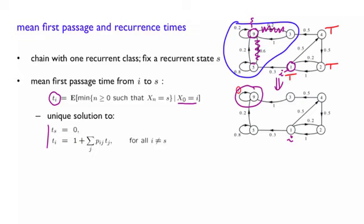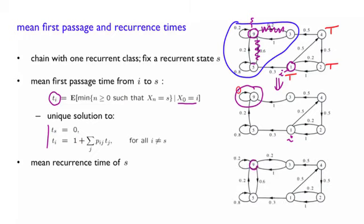So using this simple trick, we have been able to use the previous calculation to calculate something else. Let us consider a related question, which we call the mean recurrence time of s. Here, let's go back to the original graph. And this is our state s.